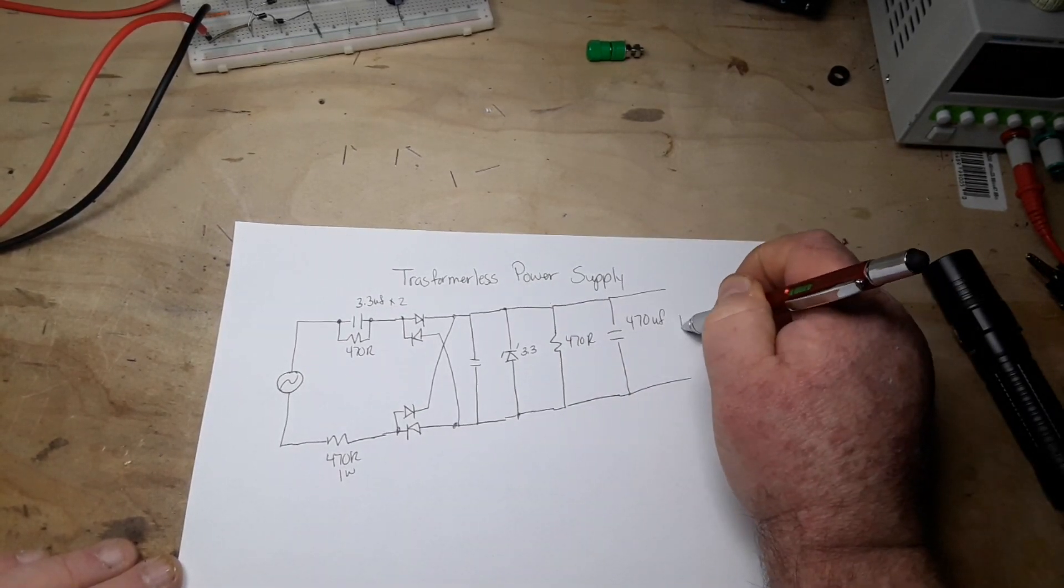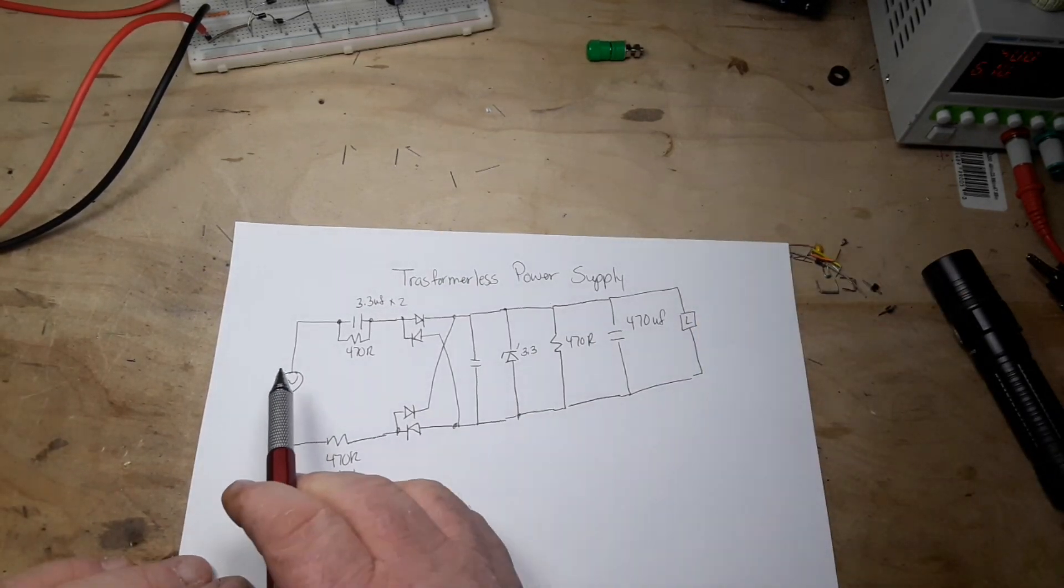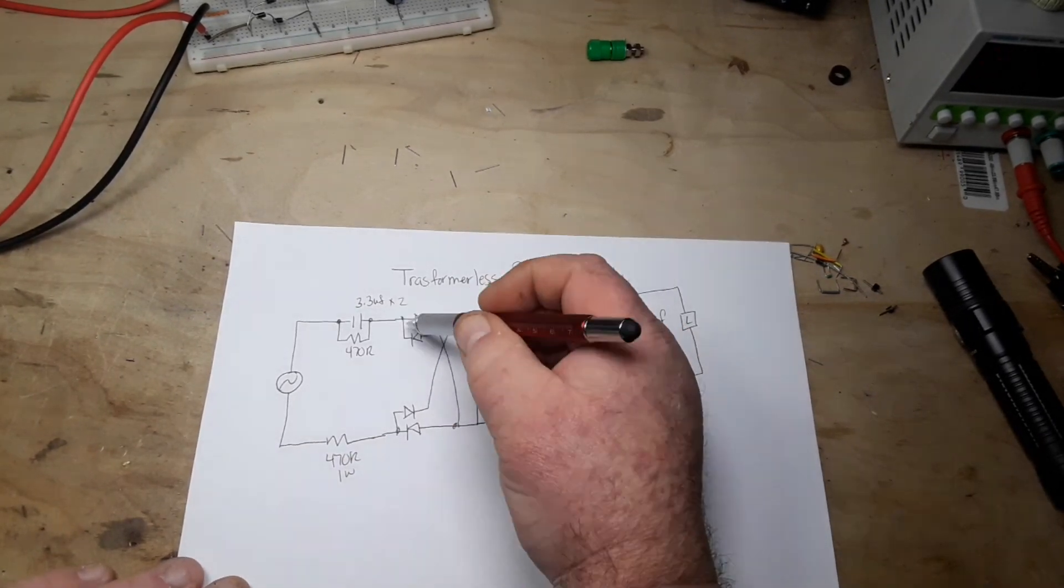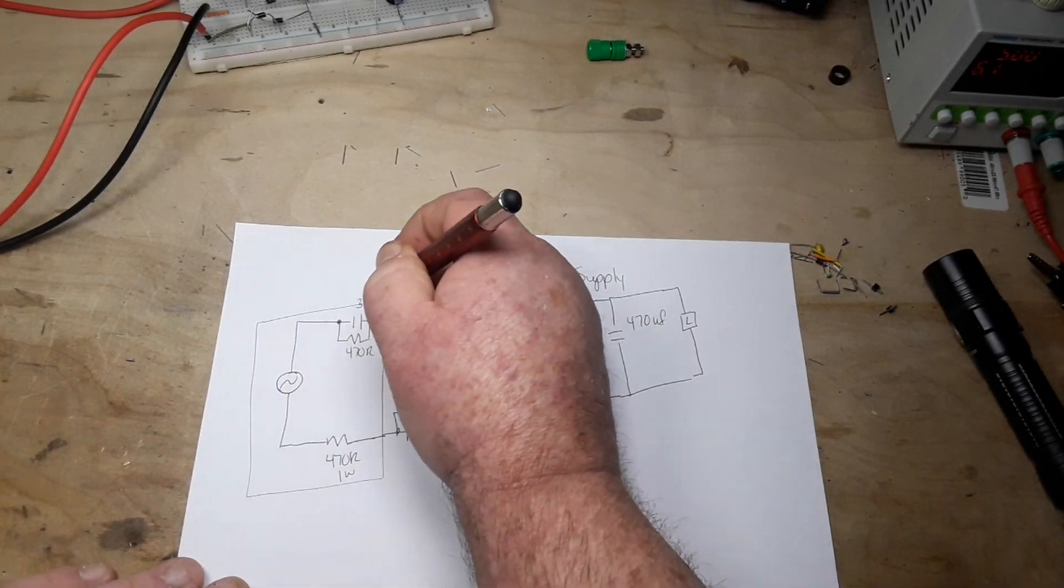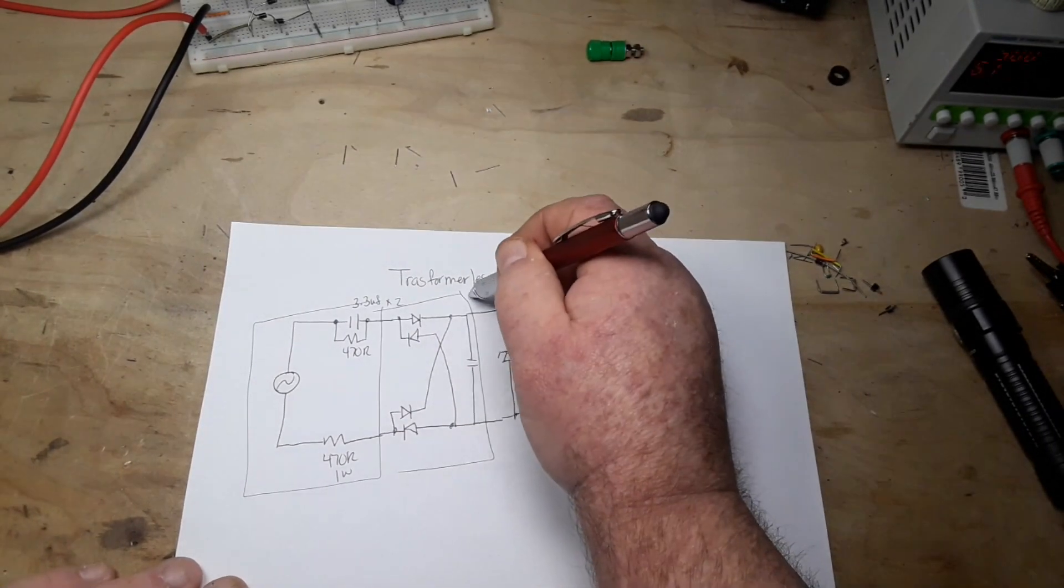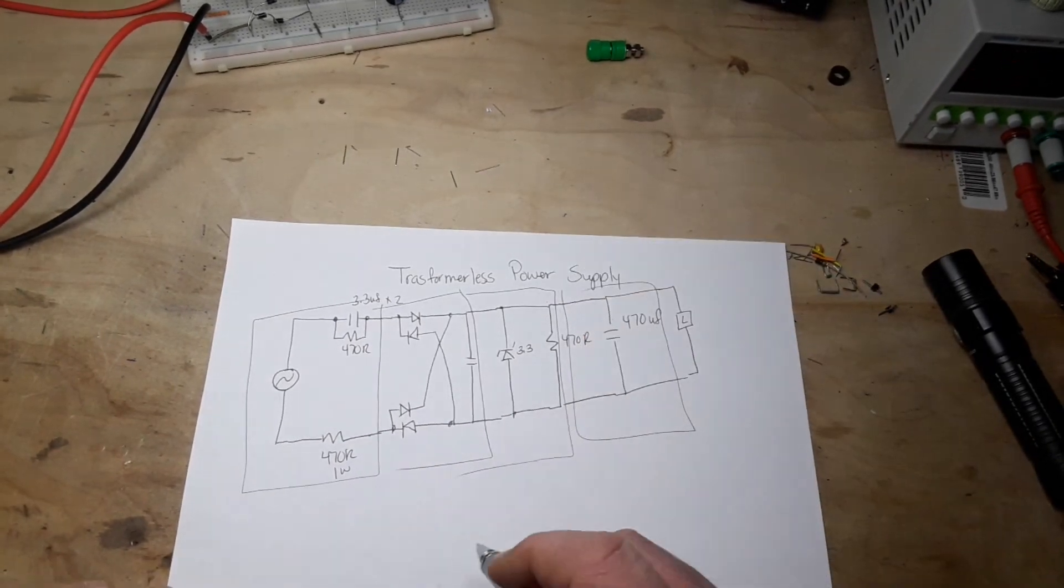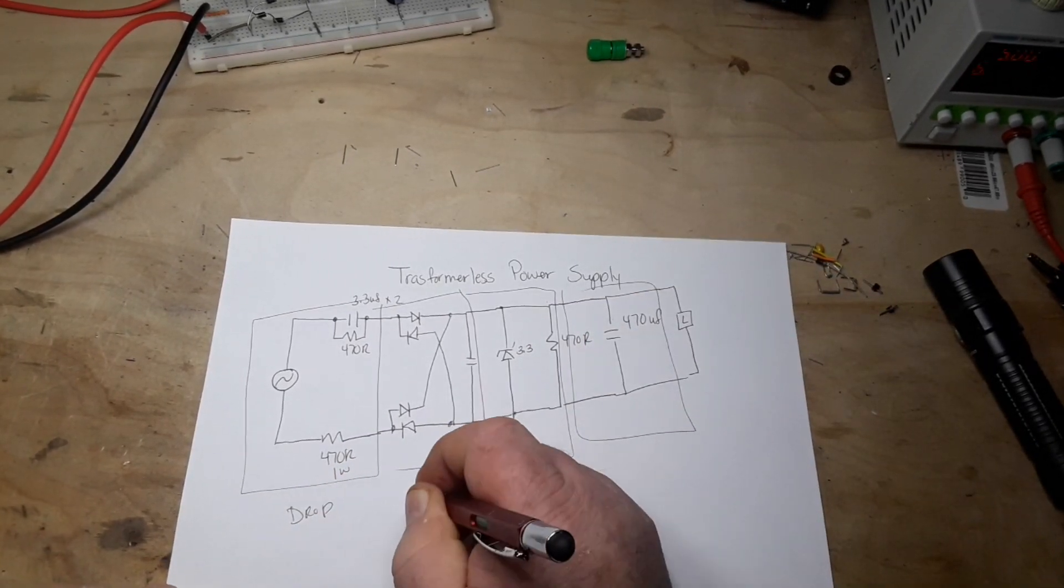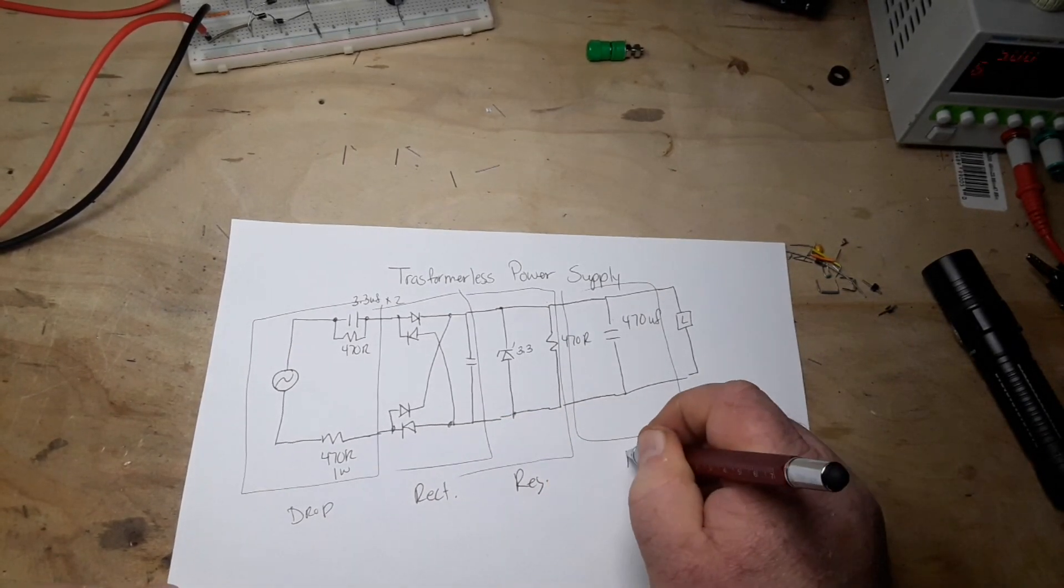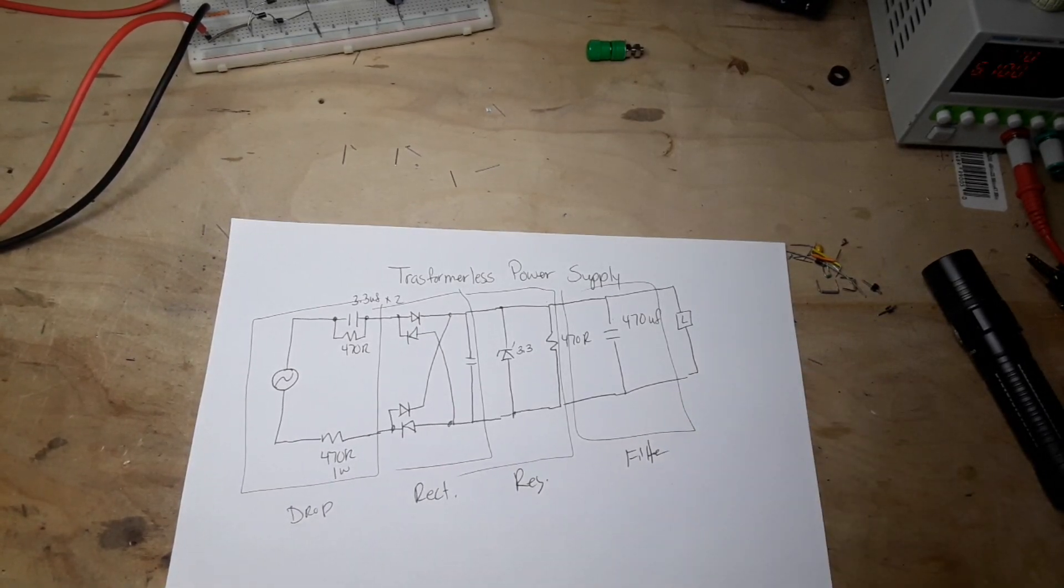Again, the way this will work is on each cycle, this capacitor will let a small piece through. This is our dropper part. This is our bridge rectifier section. This is our voltage regulator section. This is our filter section. So we have the drop, the rectification, the regulation, and the filter. Are you with me so far? Good.